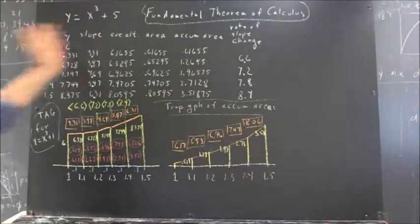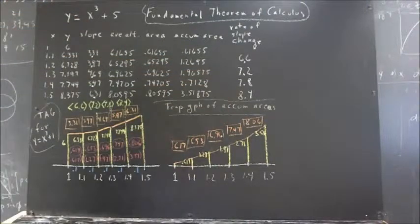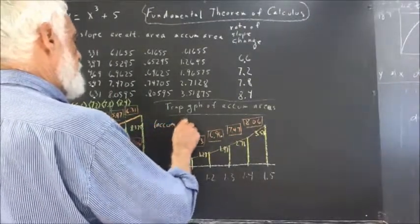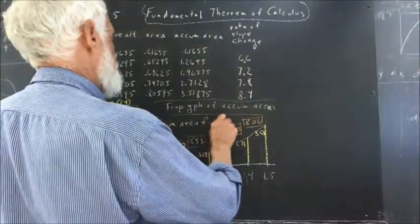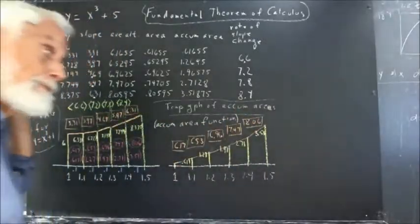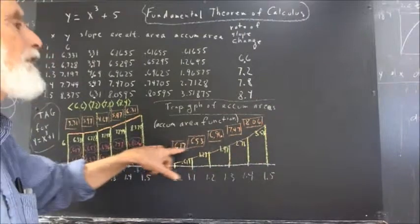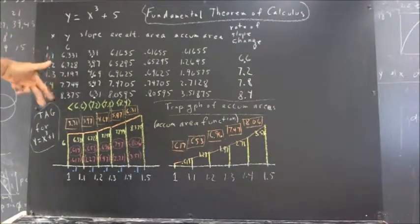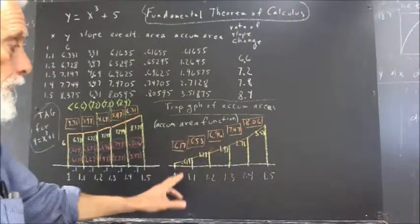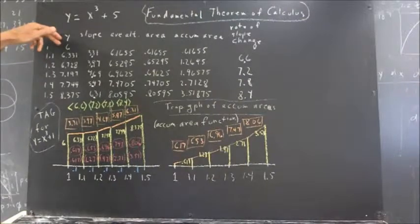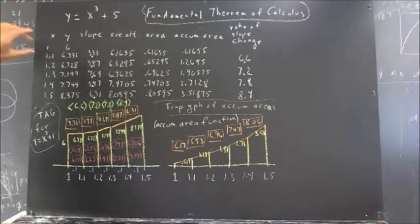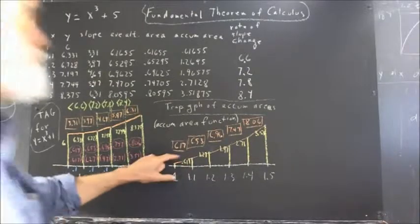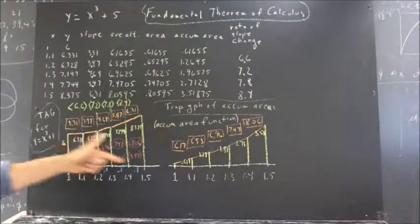Now, if we look back at the table for our original function, because these are the accumulated areas, this is a graph of the accumulated area function. So let's just call this the accumulated area function. We see that these average slopes match these average altitudes, and they're close to the y altitudes, okay? If we assign each of these slopes to the midpoint of its trapezoid, we're going to be pretty close to the value of this function at the x value in the middle of the trapezoid, okay? So there's a close relationship between the slope of the accumulated area graph and the value of the original function.